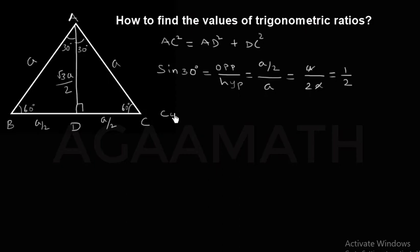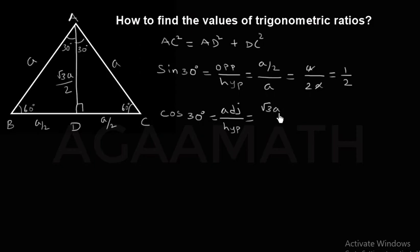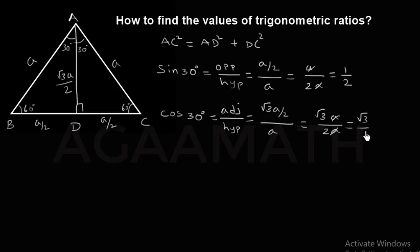Similarly, cos 30 degrees. The ratio of cos is adjacent side of theta by hypotenuse side of theta. So the adjacent side of this 30 degrees is √3·a/2, divided by hypotenuse a. It means √3·a/2a, which simplifies to √3/2. So cos 30 degrees = √3/2.